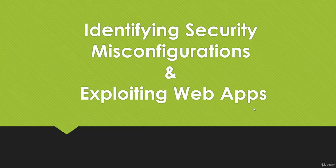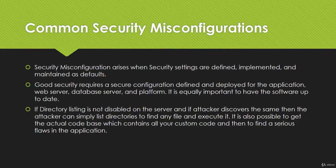Welcome to the next module of this program. In this module we will talk about identifying security misconfiguration and exploiting web applications. First, we'll see what common security misconfigurations are. Security misconfiguration arises when security settings are defined, implemented, and maintained as default. Good security requires a secure configuration defined and deployed for the application.